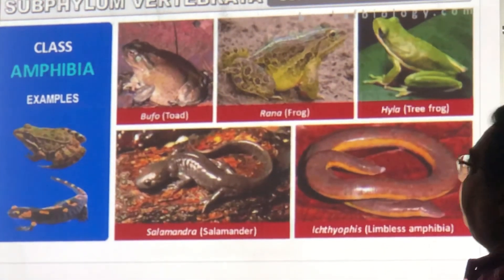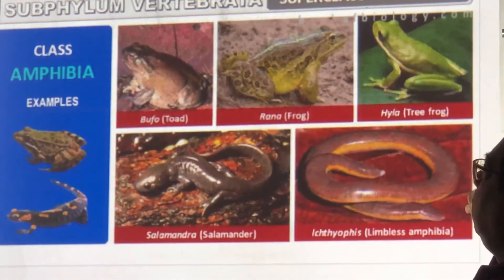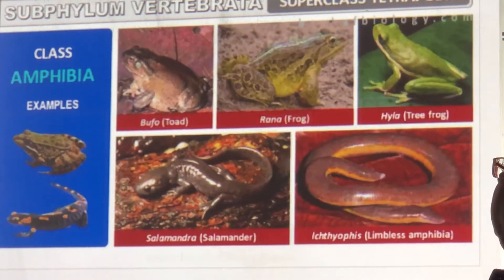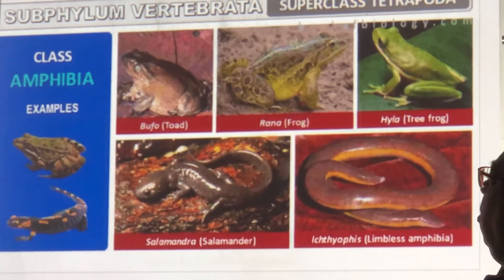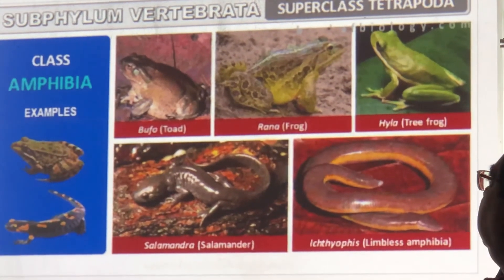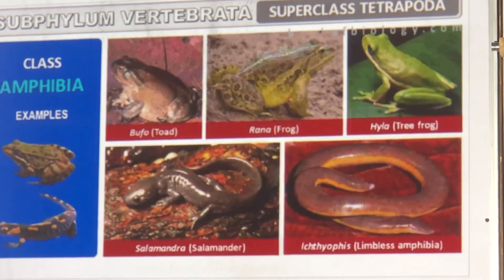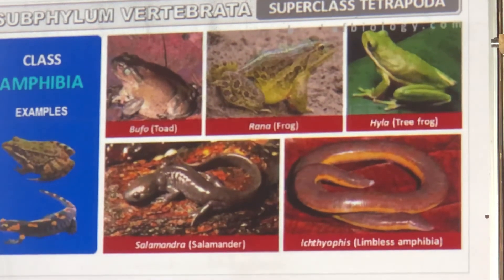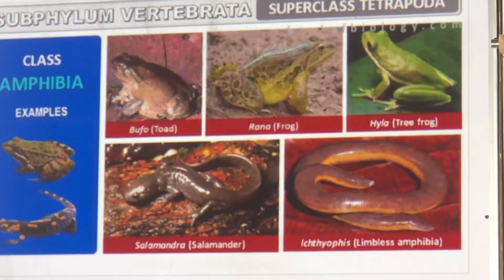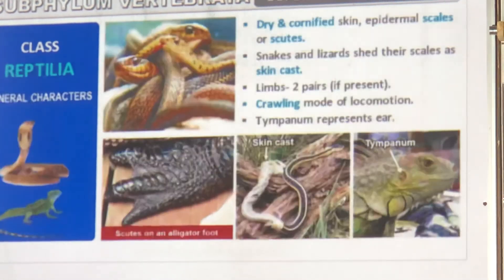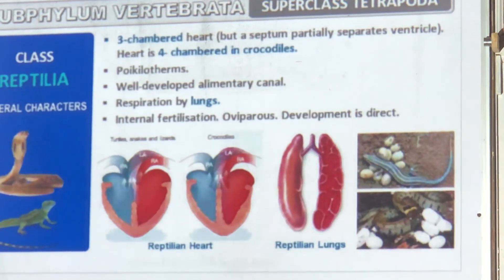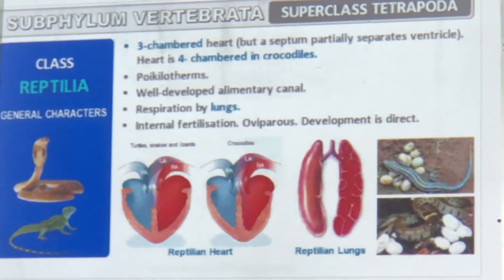Examples of Amphibia: Bufo (toad), Rana (frog), Hyla (tree frog), Salamander, and Ichthyophis — a limbless amphibia that looks like a snake but is actually an amphibian. Amphibia have a three-chambered heart.